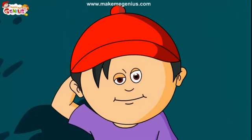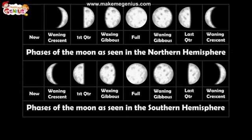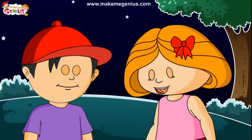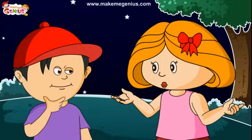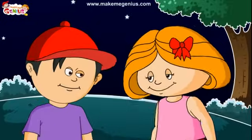Phases of the moon? Yes, the revolution of the moon around the earth makes the moon appear as if it is changing shape in the sky. From the earth, we see the moon grow from a thin crescent to a full disk and then shrink back to a thin crescent again before vanishing for a few days. Let us wear our astronaut suits and go to the sky to understand the different phases of the moon.